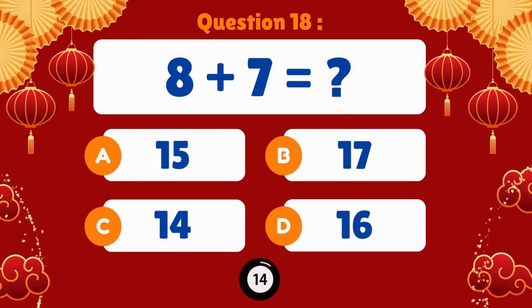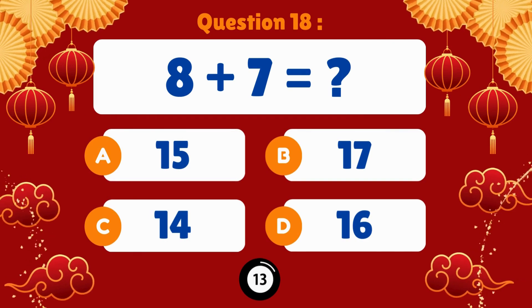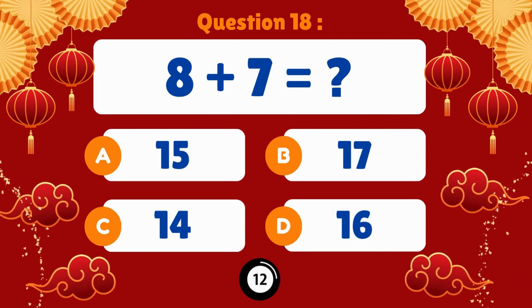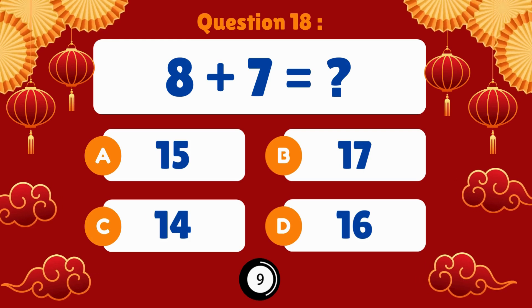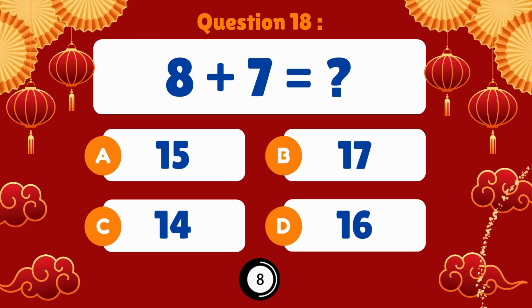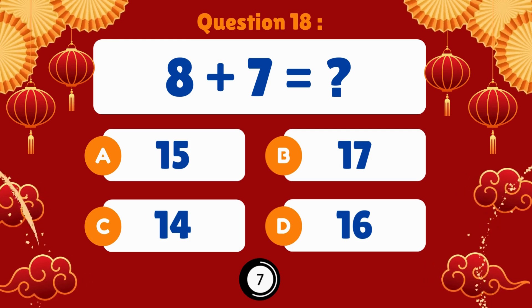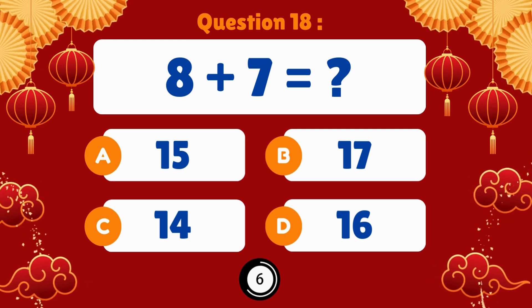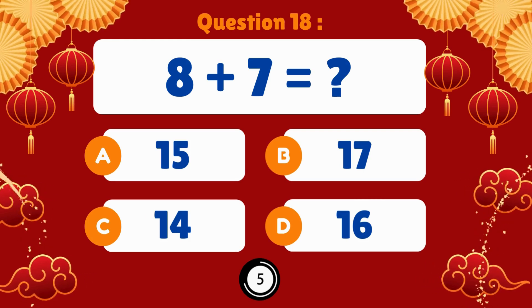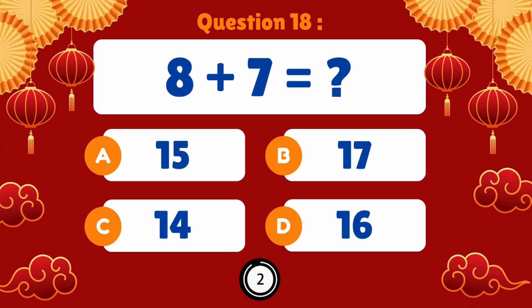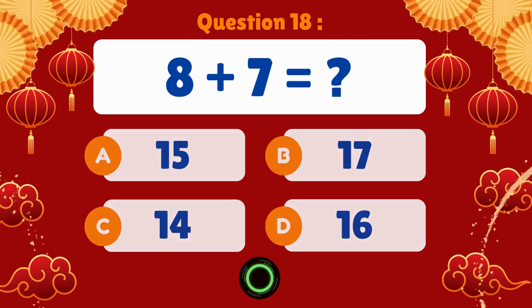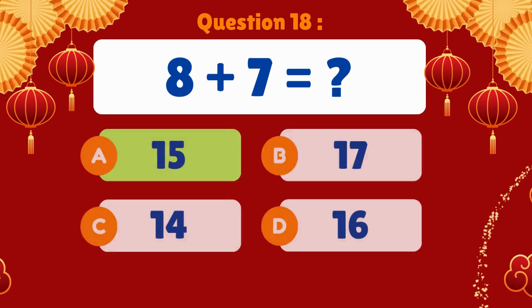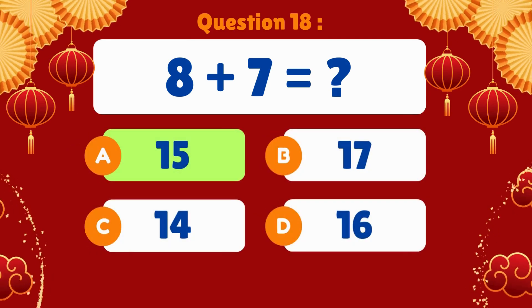Eight plus seven. Eight plus seven is equal to fifteen.